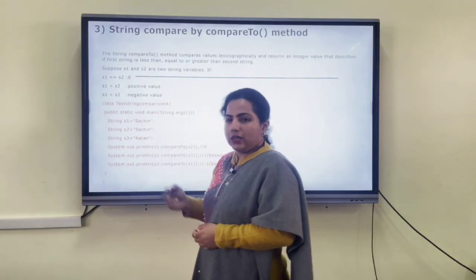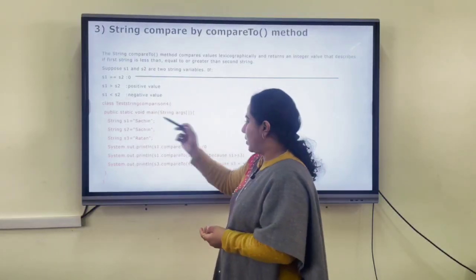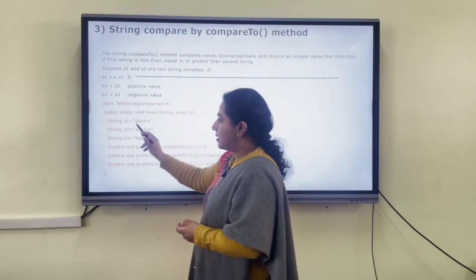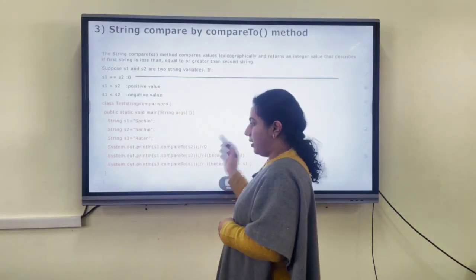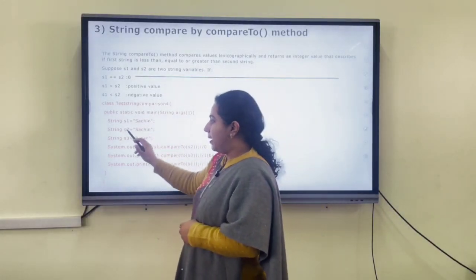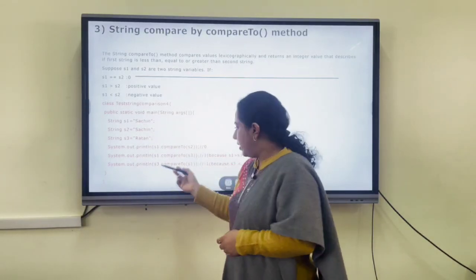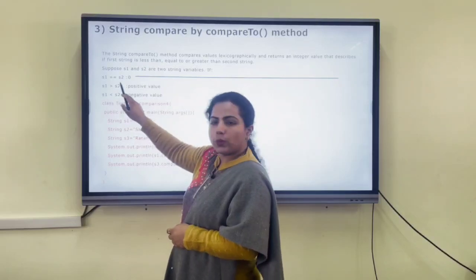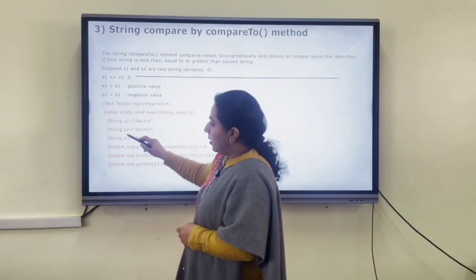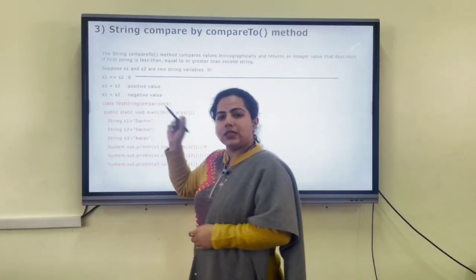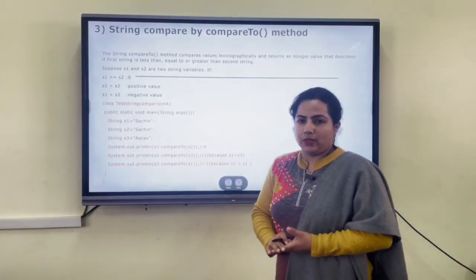For example, three strings are taken — two with the same value and one with a different value. If we compare s1 and s2 which have the same value, s1.compareTo(s2) returns 0. If we compare s2.compareTo(s3), where s2 is greater, it returns a positive value such as 1. Conversely, s3.compareTo(s2) returns a negative value such as -1.